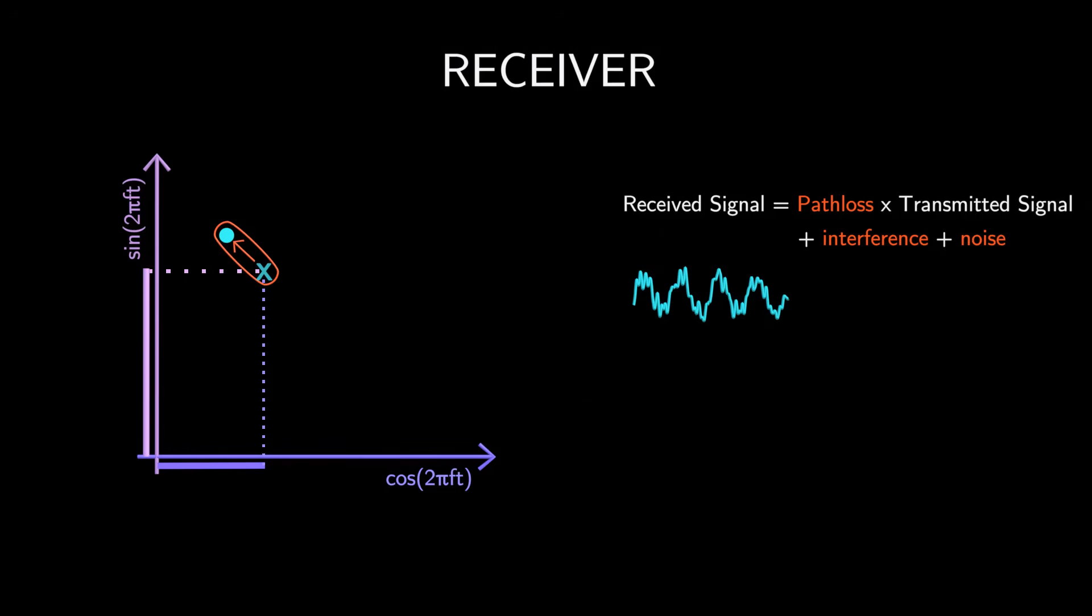Of course, the receiver can estimate these values using pilot signals, but it can't know them precisely.